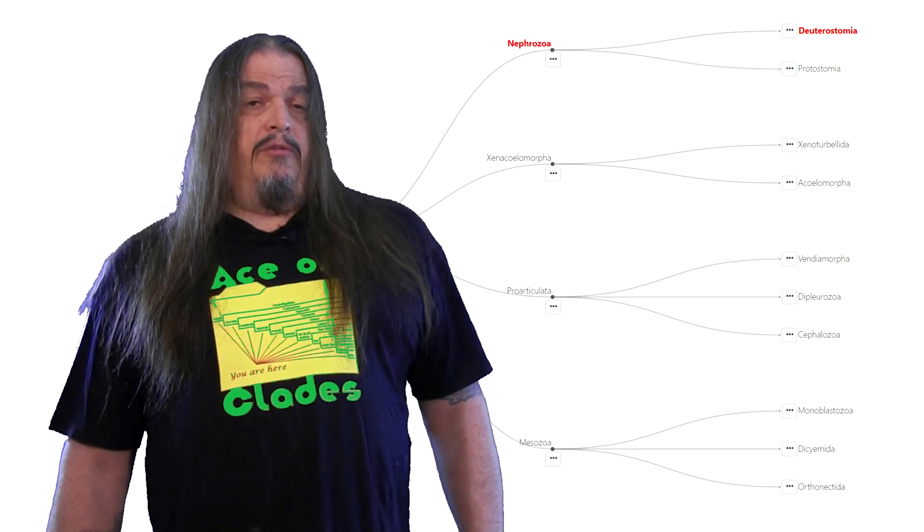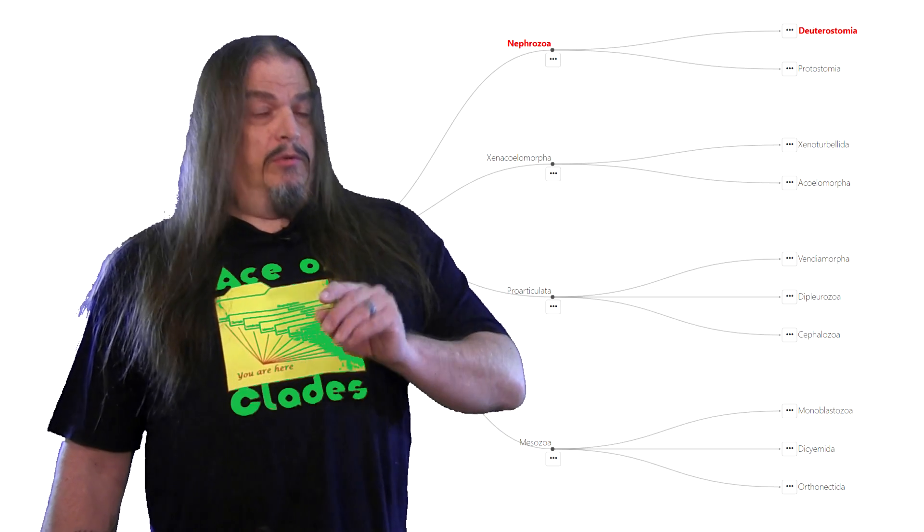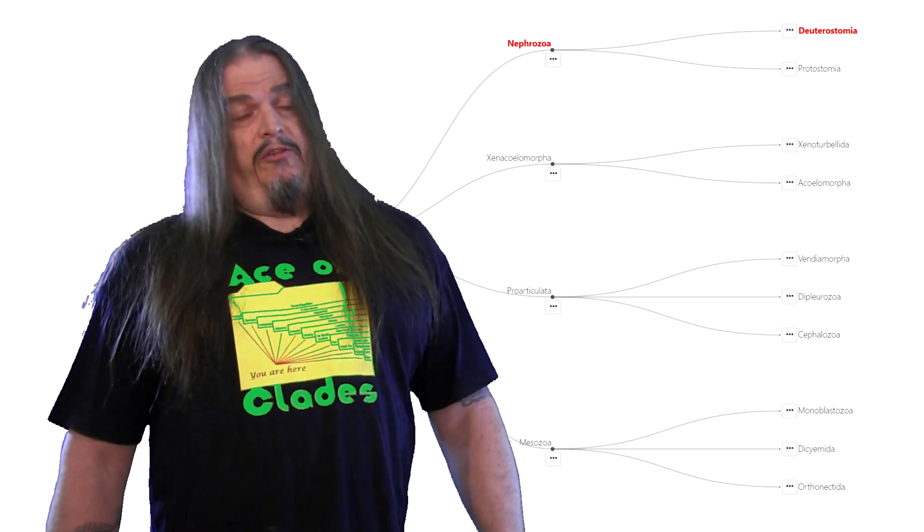You should also accept that you're a deuterostome, because you have to admit that at least once when you were very young, you were basically just a total asshole.